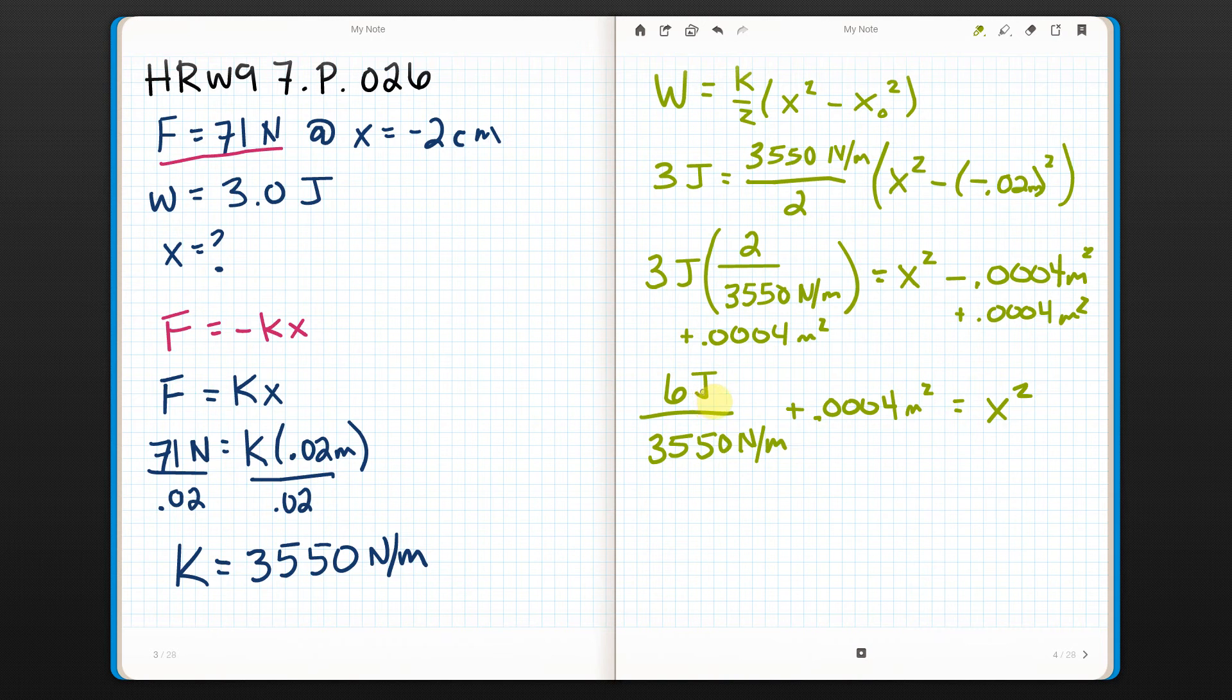If I do joules over newtons per meter, I just want to make sure the units work out, just to make sure, because we should always make sure. So I've got joules over newtons per meter, that's the same as meters per newton. Let's just make sure that that comes out to meters squared, because it has to if I'm going to add these two. They need to be the same. And I need them to be meters squared so that when I square root it, I get meters, which is what I'm looking for.